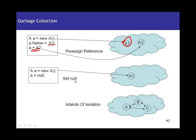Number two: assign the reference to null. This is kind of similar to reassigning the reference, but instead of reassigning to another object, we are simply assigning that reference to null. A was pointing to A1 earlier, but now since I have assigned it to null, there is no active reference to A1. Nobody can reach A1 now, so this object is again eligible for garbage collection.